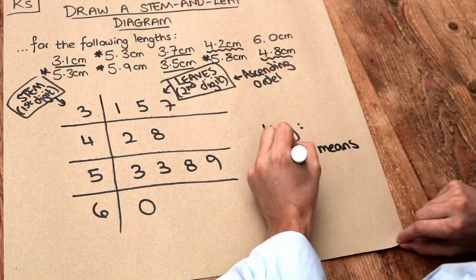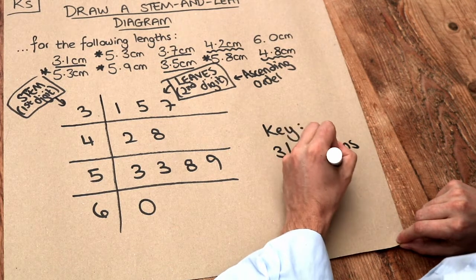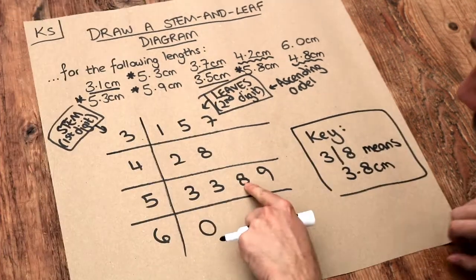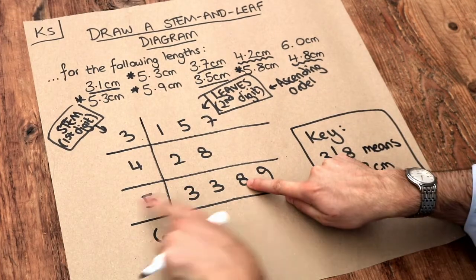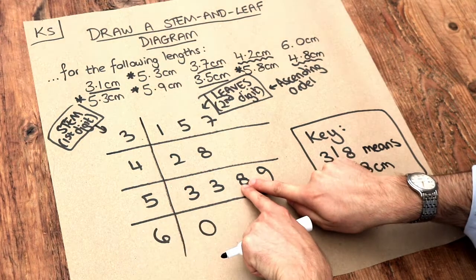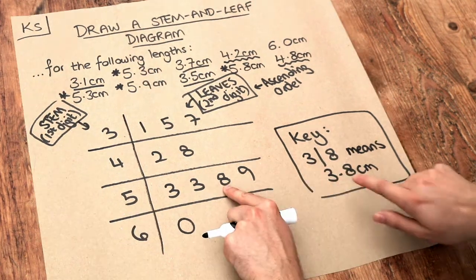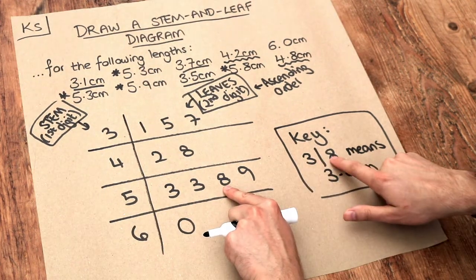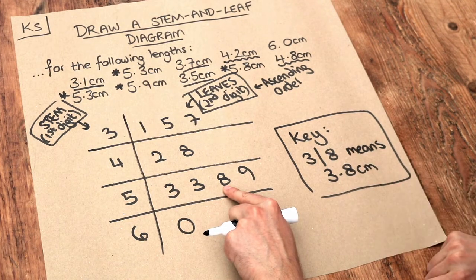So if we look at this particular number here — the five with the eight — first digit, second digit — according to this key, five bar eight would mean 5.8 centimeters.